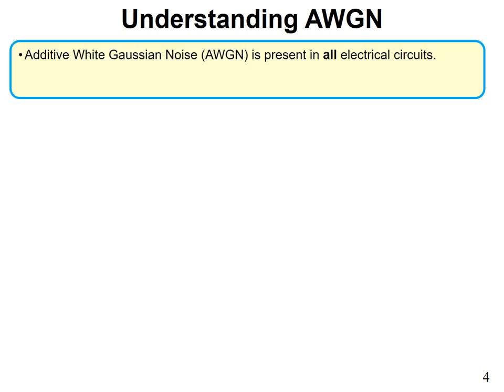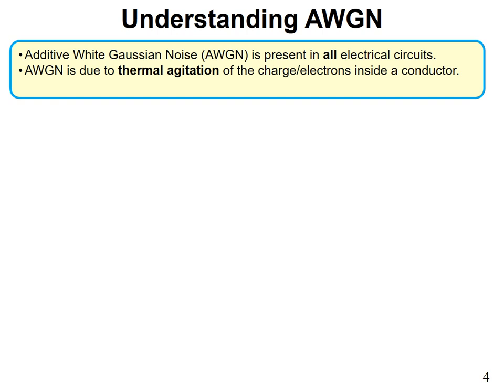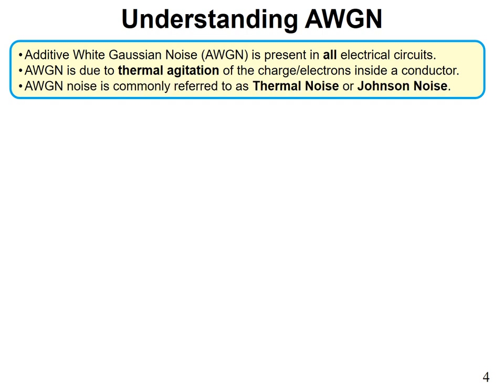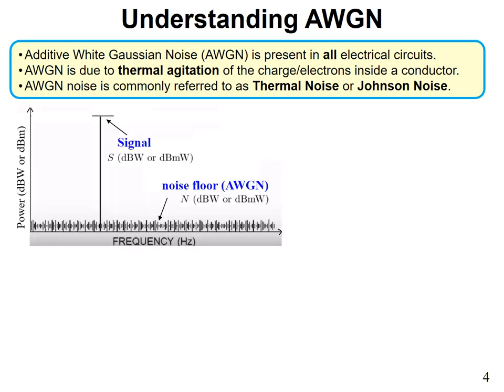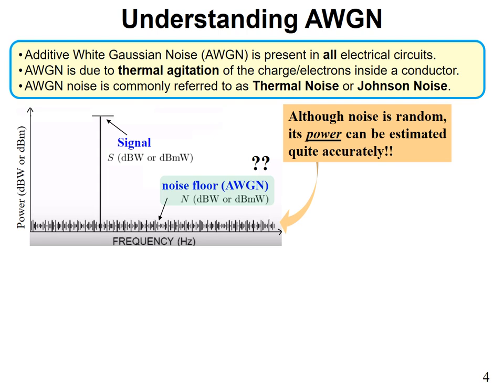AWGN is present in all electrical circuits. It is due to thermal agitation of charge and electrons inside a conductor. AWGN is commonly referred to as thermal noise or Johnson noise. Looking at the noise floor in the frequency domain — how can we figure out or estimate this value? Although noise is random, its power can be estimated quite accurately. The noise shape varies in the time domain with each instance, but it will generally be confined to the noise floor.